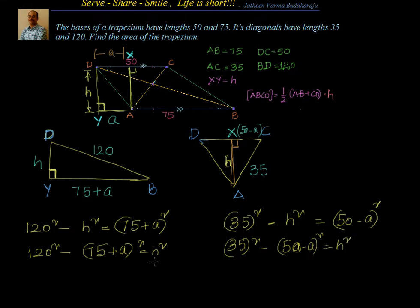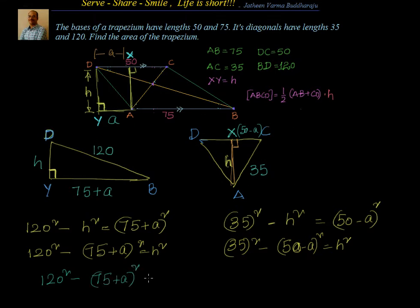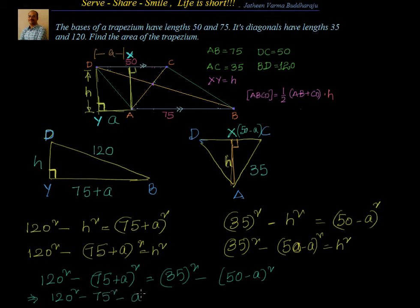Equating H² from both equations gives a new equation: 120² minus (75 + A)² = 35² minus (50 minus A)². Expanding using the formula (a + b)² and (a − b)²: 120² minus 75² minus A² minus 150A = 35² minus 50² minus A² plus 100A.